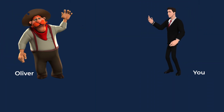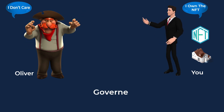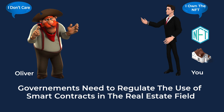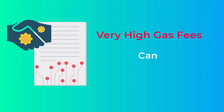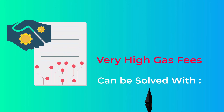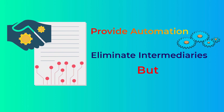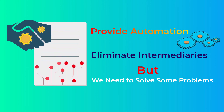Also, what if someone claims ownership of your house and doesn't care about the NFT you own on the blockchain? This reveals the need for regulations by governments before we can fully use smart contracts, especially in the real estate field. Another drawback on the Ethereum blockchain right now is the very high gas fees, but this problem could be solved in the future with Ethereum 2.0. Smart contracts are great for many use cases — they provide automation and eliminate a lot of intermediaries — but these problems must be solved first to reach their maximum potential.